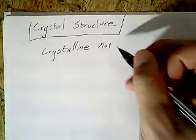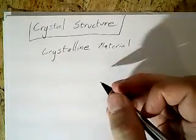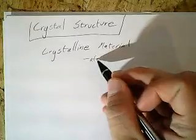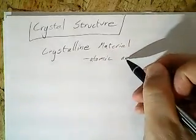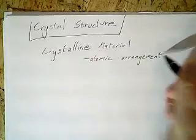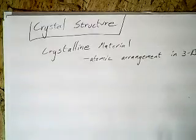This can kind of be extended to the lattice, but not exactly. A crystalline material is an atomic arrangement in 3D with a repeating order.